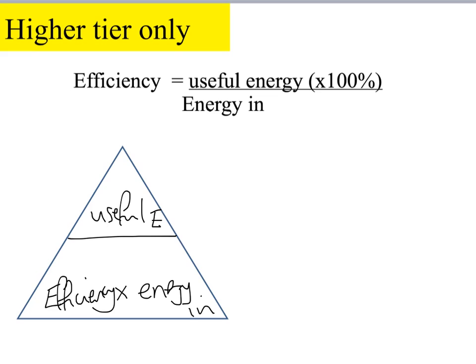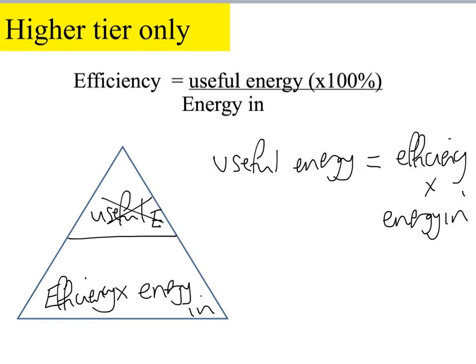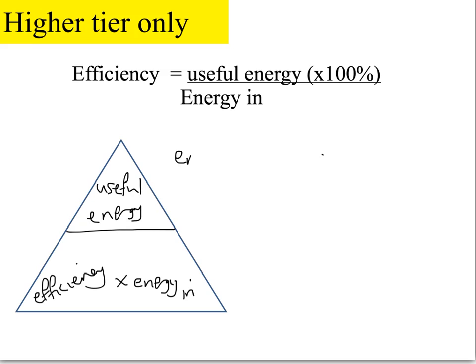Right, so let's have a go at writing two other forms of this equation. Again, you can pause this now and have a go yourself before you watch me do it. So if we're asked to calculate the useful energy, we cover that up and we see that that's the efficiency multiplied by the energy in. If we want to write another expression for the energy in, then we cover that up and we're left with useful energy divided by the efficiency.